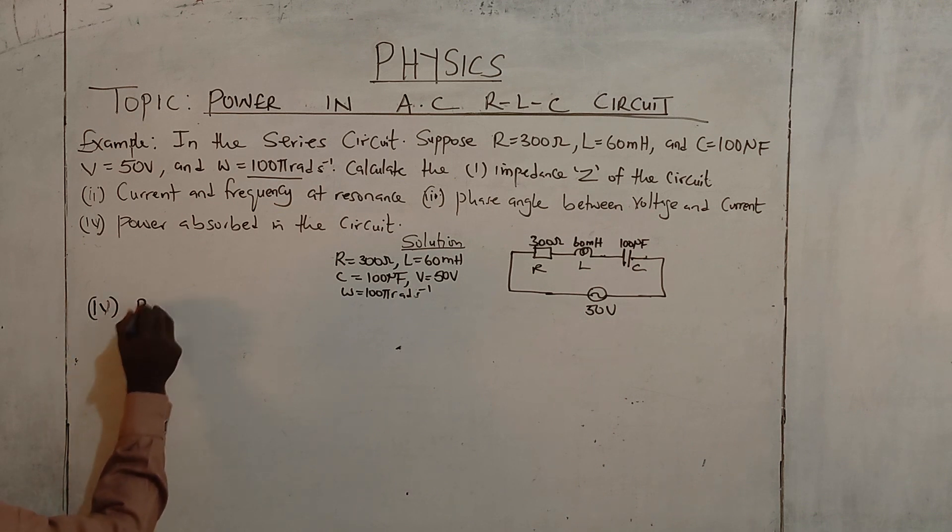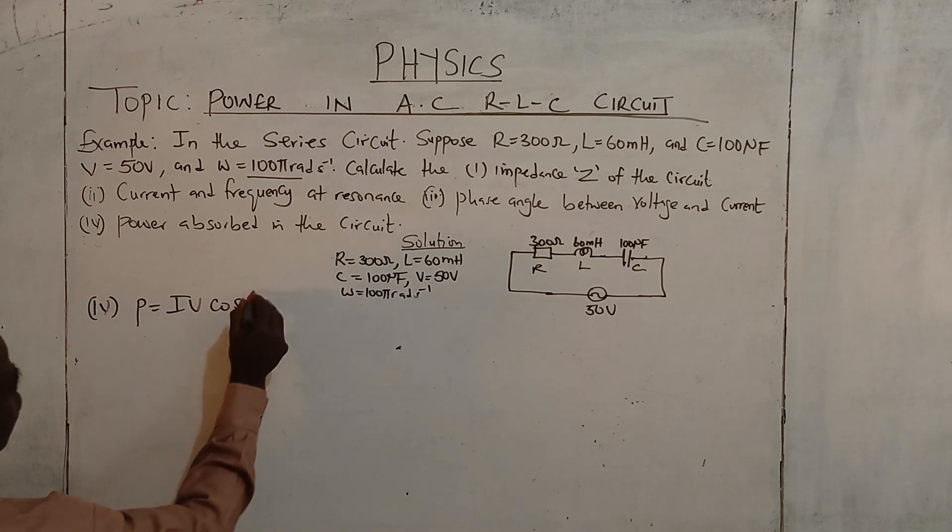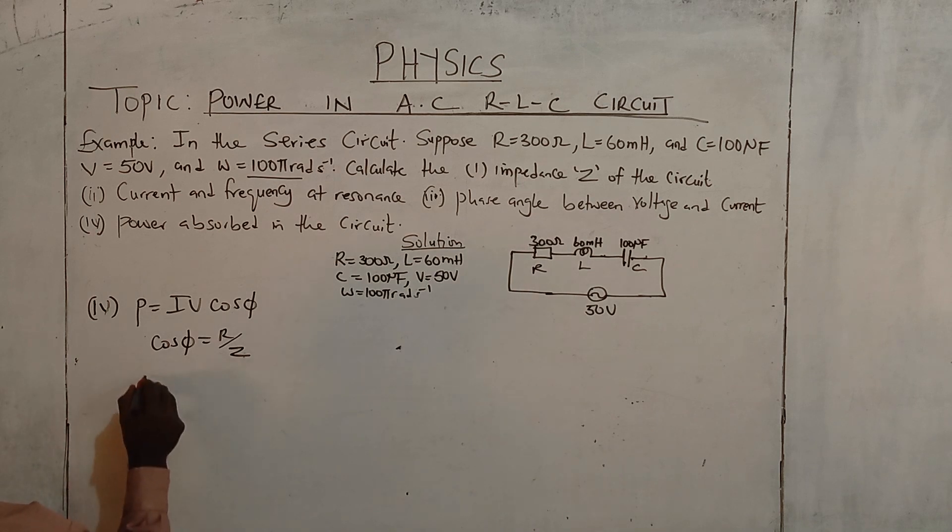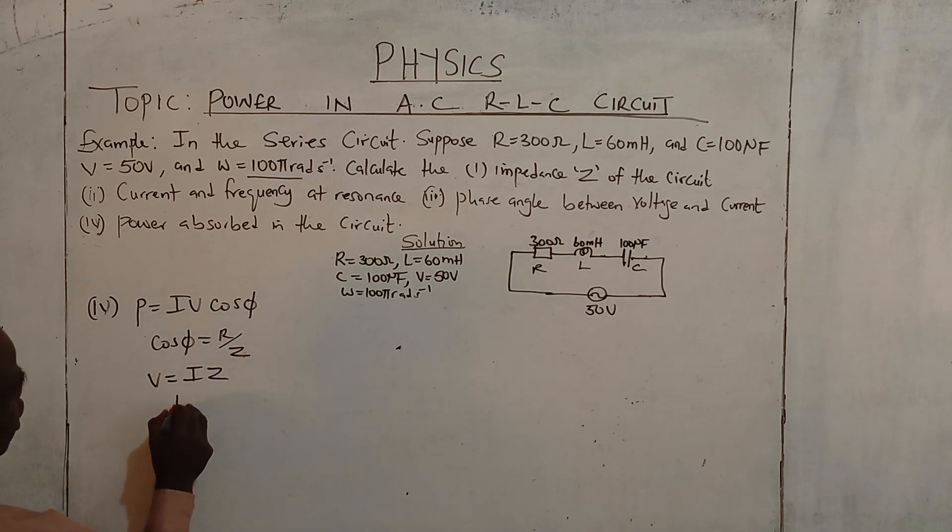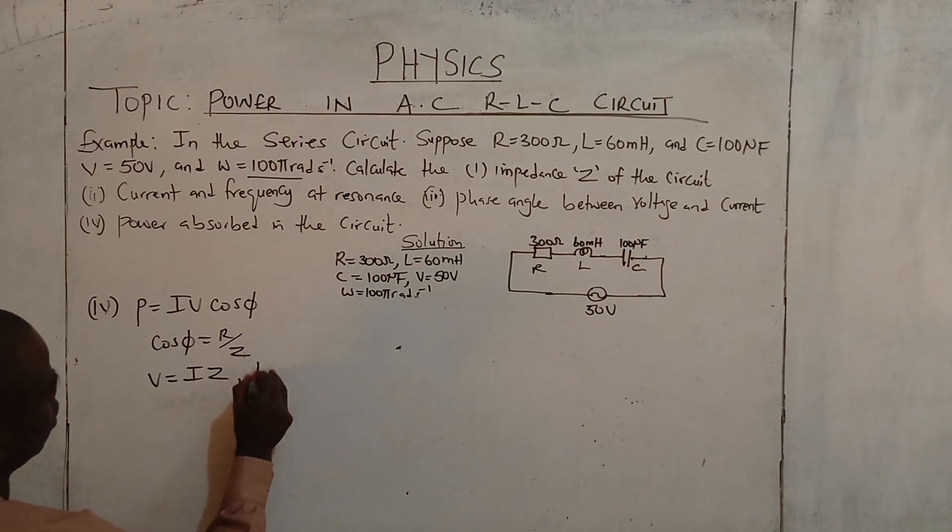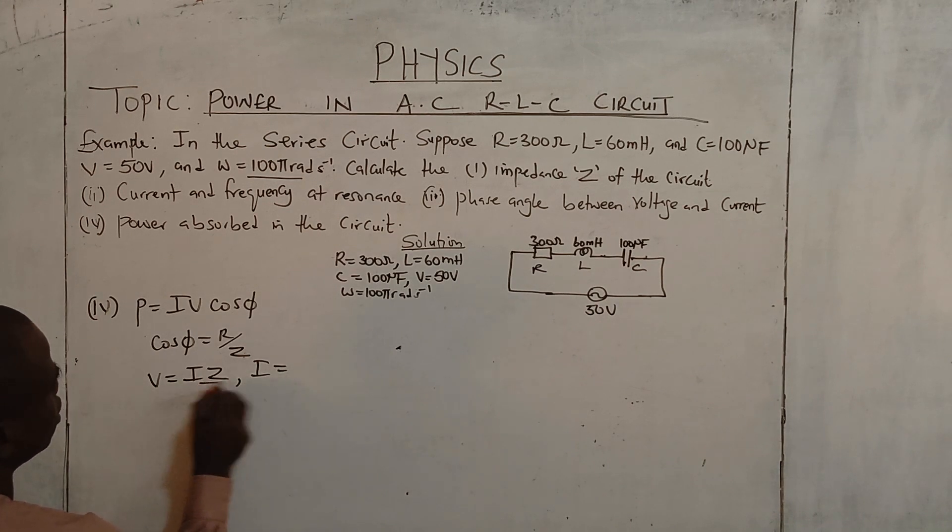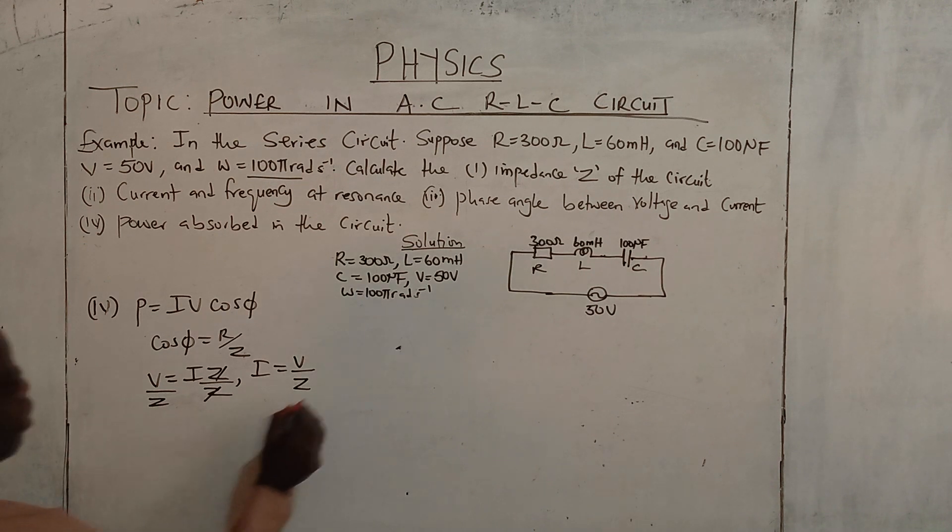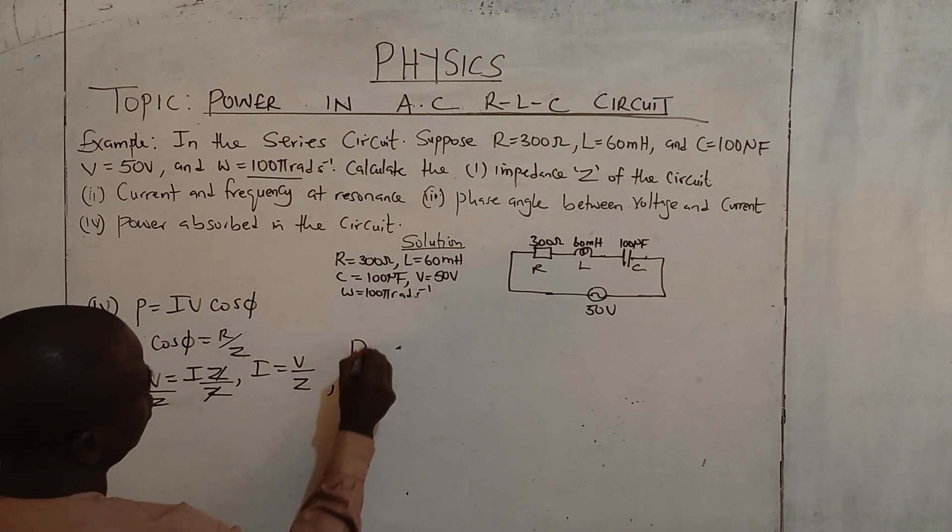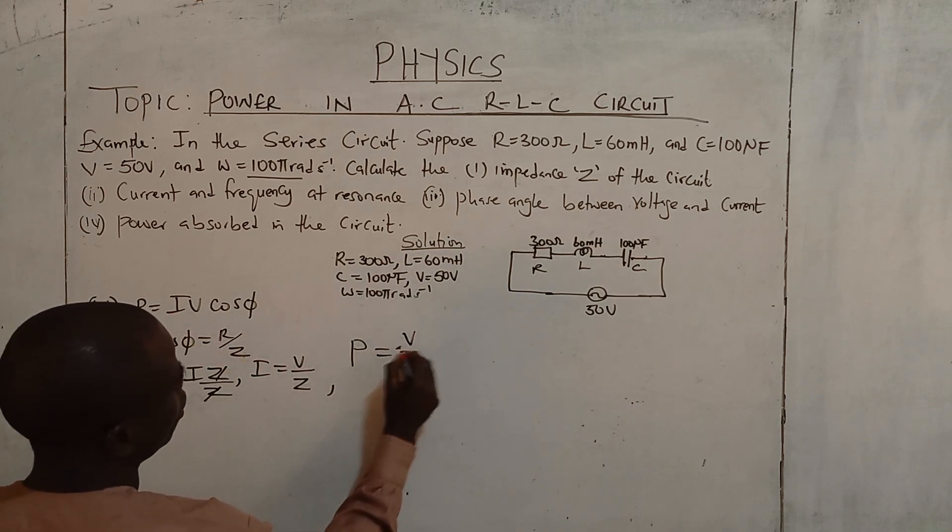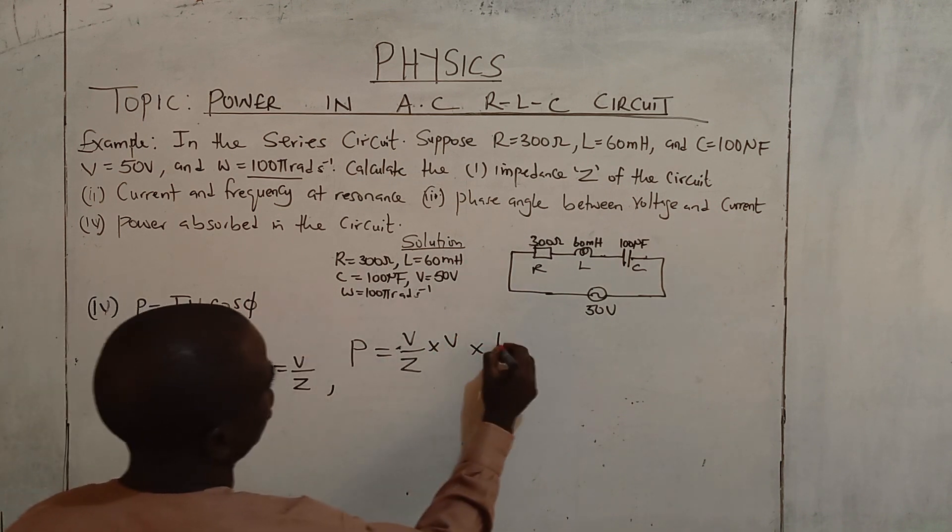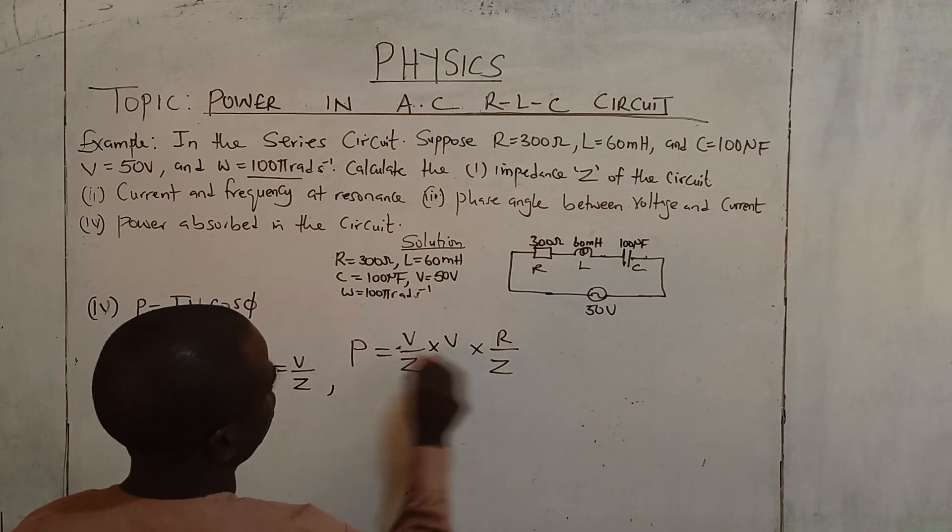The power absorbed in the circuit. Power absorbed in the circuit, power equal to IV cos φ. Well cos φ is R over Z. And you know that power V equals to I times Z. In the circuit, cos through the circuit. Now I equals V over Z. Now write the power. Instead of putting I equals V over Z times V, so cos φ, V over Z times V equals V squared over Z.